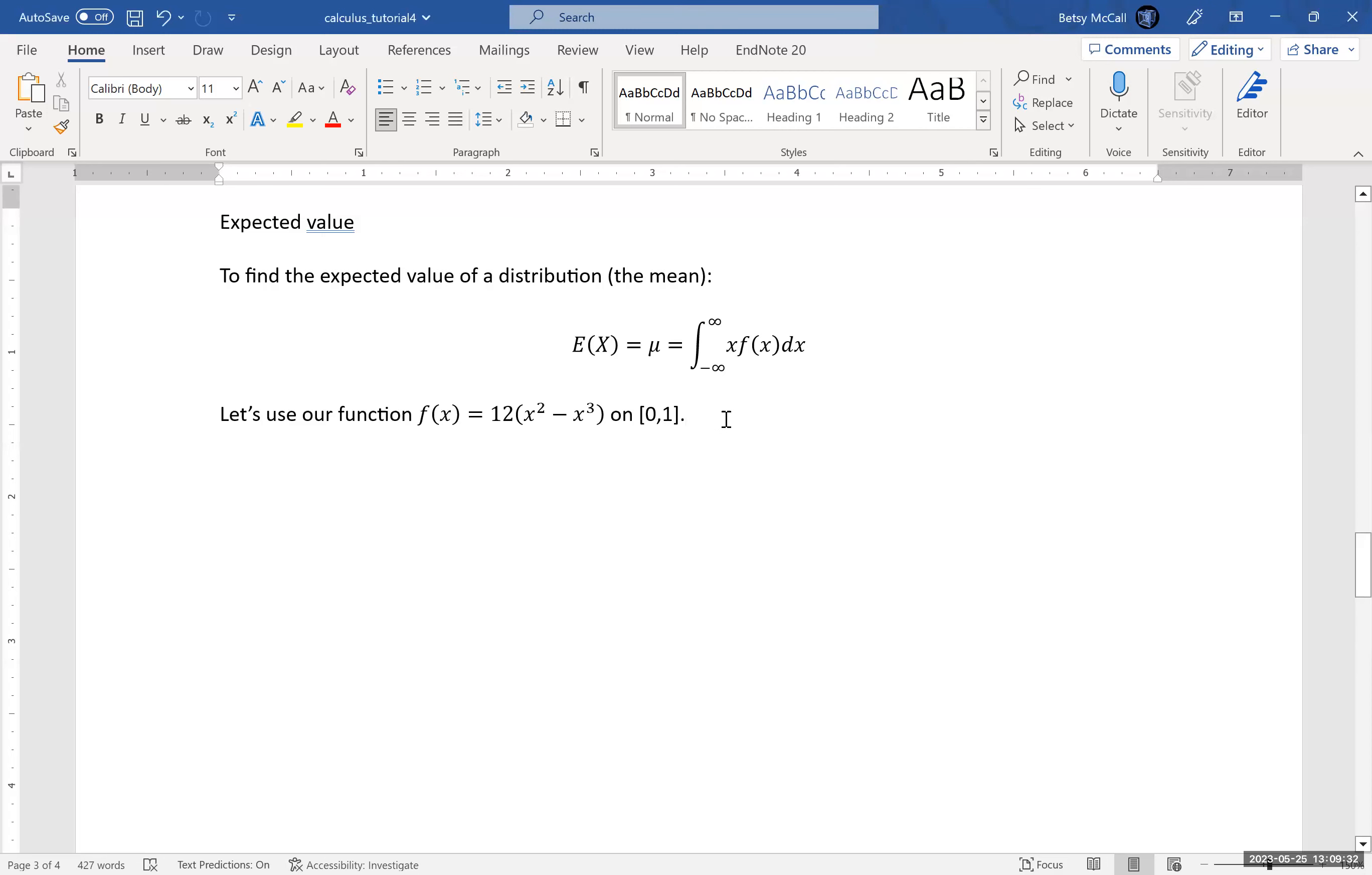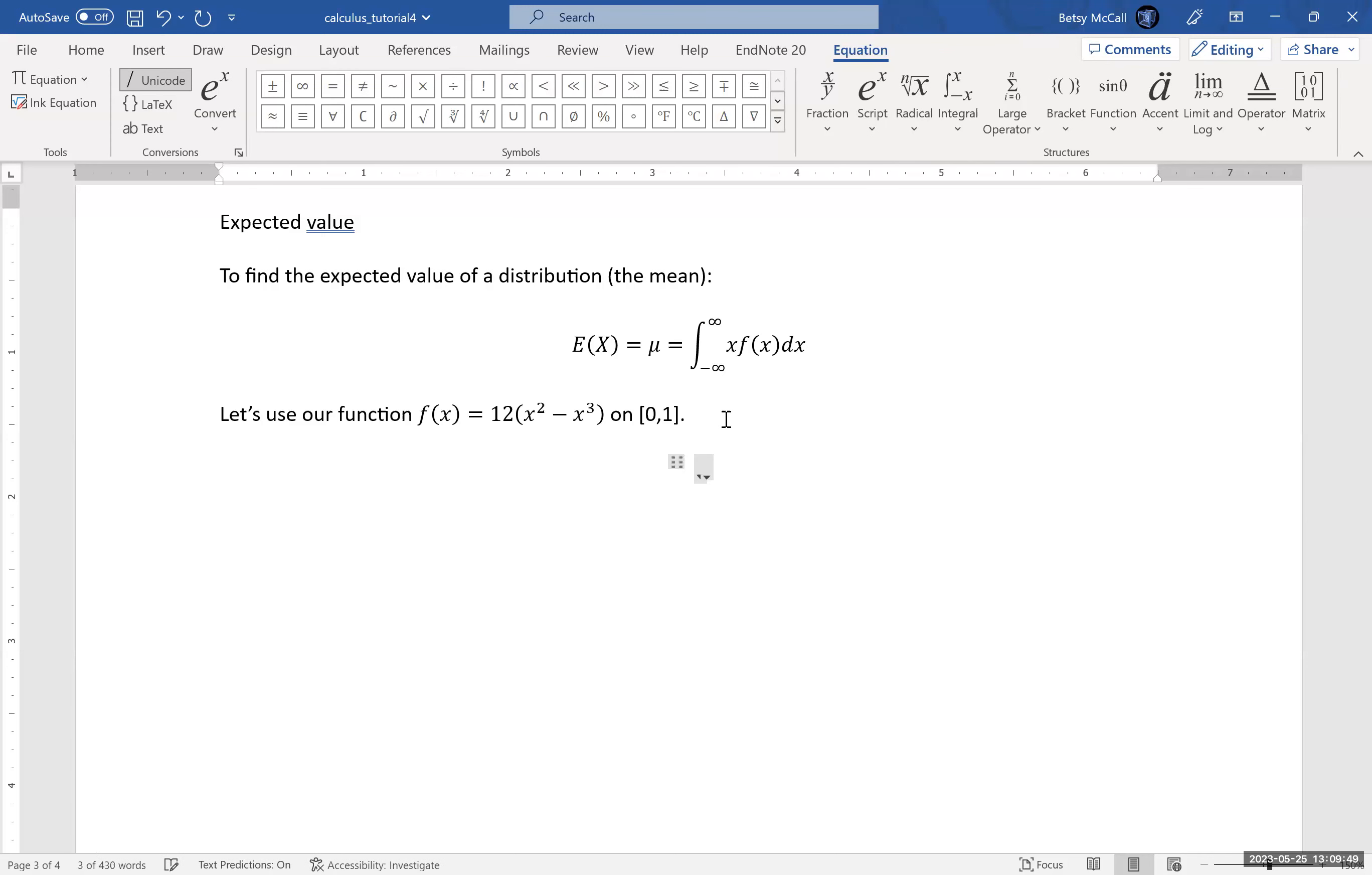If we want to find the mean, we saw that the median was like 0.61, and so we're going to calculate where the mean is. That's going to be E(x), which equals the integral from 0 to 1 of x times 12(x² - x³). I'm going to pull the 12 out and then distribute my x.